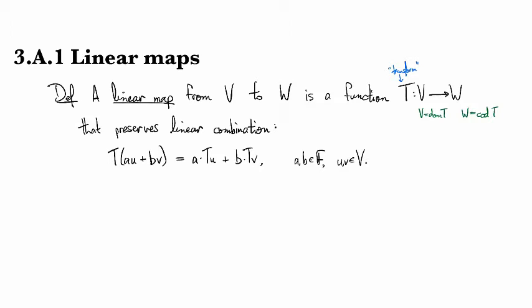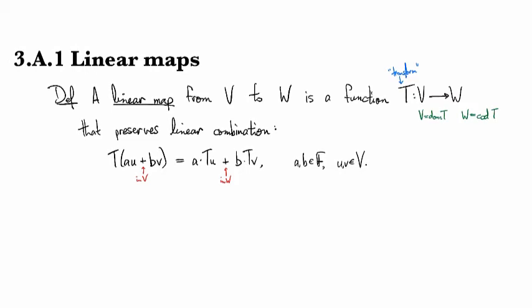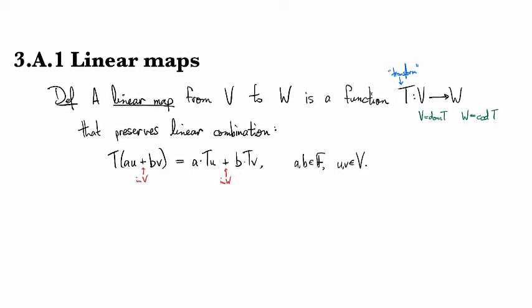This definition only makes sense if U and V are vector spaces because you have to do certain operations here. This plus right here takes place in V, so you have to know how to add things that come from V. This plus right here comes from W, so you have to know how to add things in W. If you just tried to do this with sets V and W that weren't vector spaces, none of this would make sense because you wouldn't have the operations defined.